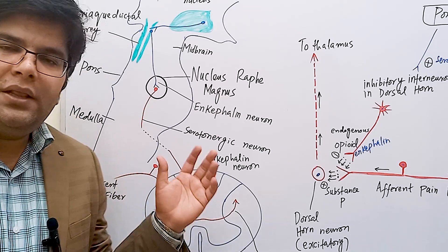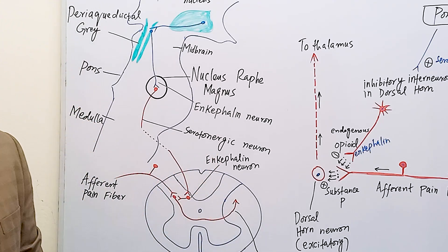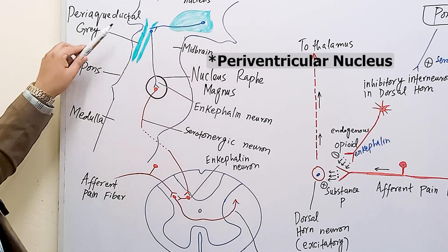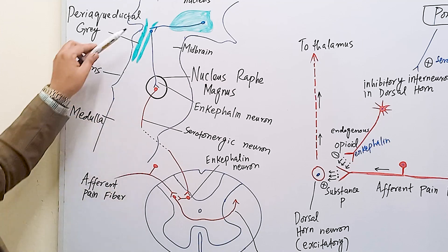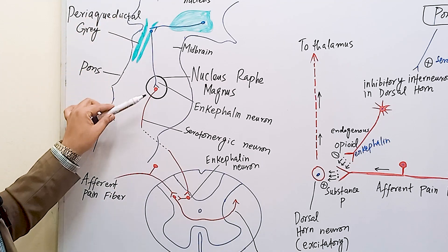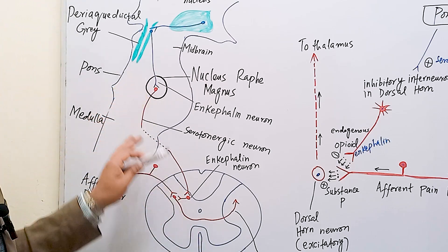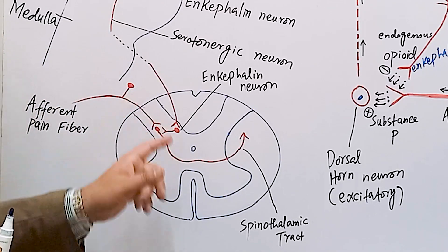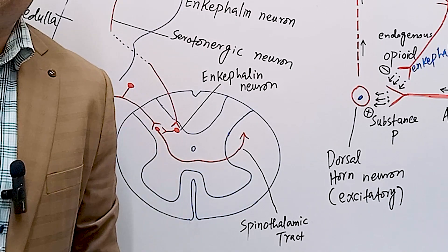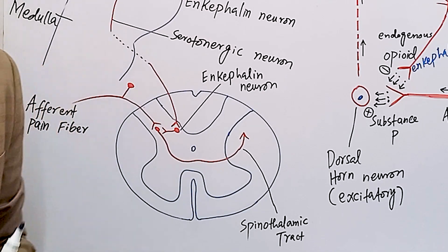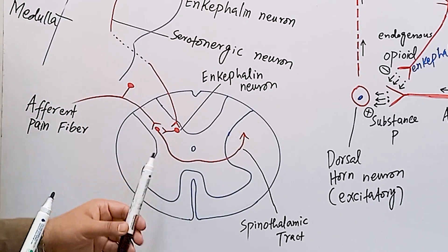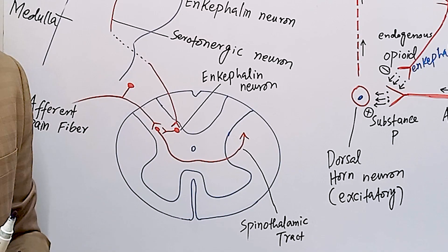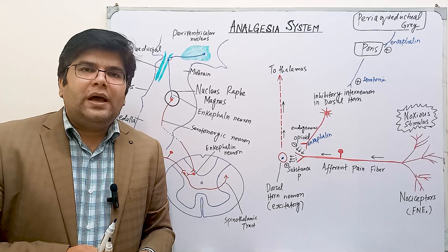The important neurotransmitters involved in this analgesia system are enkephalin and serotonin. Enkephalin is the neurotransmitter released by neurons in the periaqueductal nucleus. The nerve fibers in the periaqueductal gray matter stimulate the neurons in the nucleus raphe magnus, which releases serotonin. The inhibitory interneurons in the dorsal gray horn of the spinal cord release enkephalin, and this causes presynaptic and postsynaptic inhibition of the pain nerve fibers, suppressing transmission of pain signals along the spinothalamic pathway.